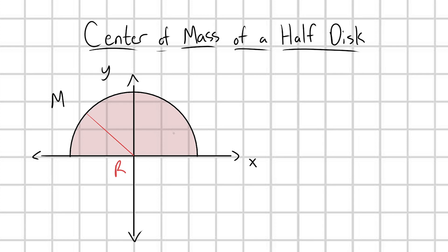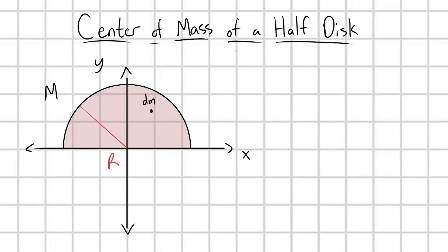The first thing is we recognize that this is a continuous body. It's not made up of discrete mass points. So what I'm going to do is I'm going to label some infinitesimal mass element dm. And this infinitesimal mass element is going to be located at some position. I'm going to point to it with a position vector, little r.